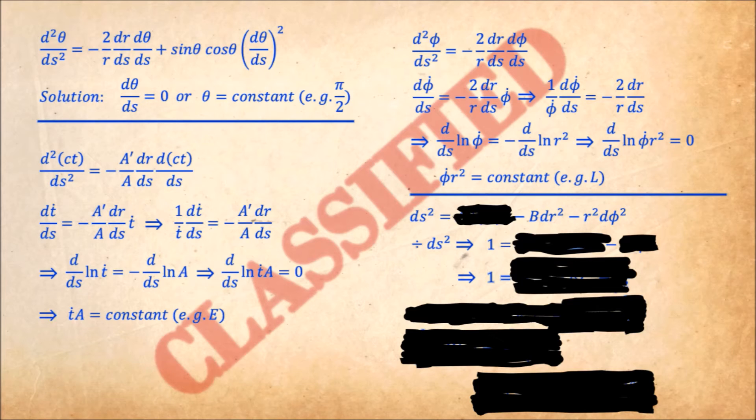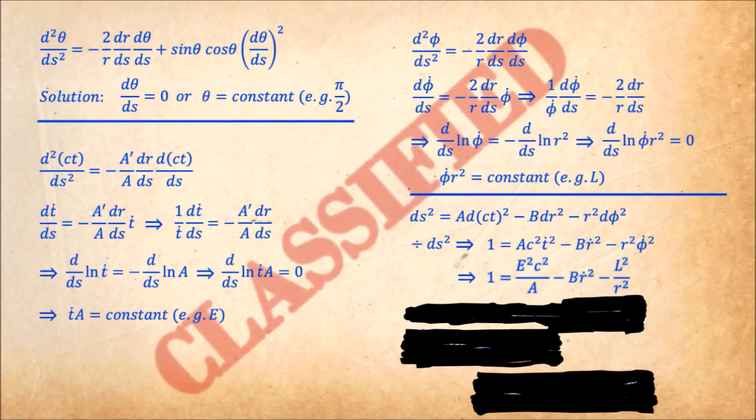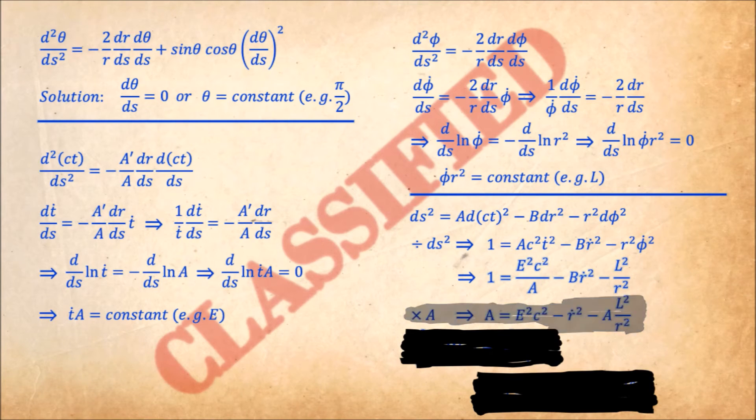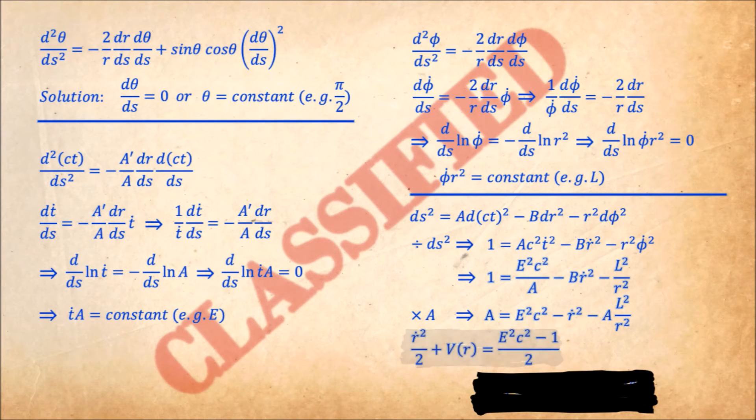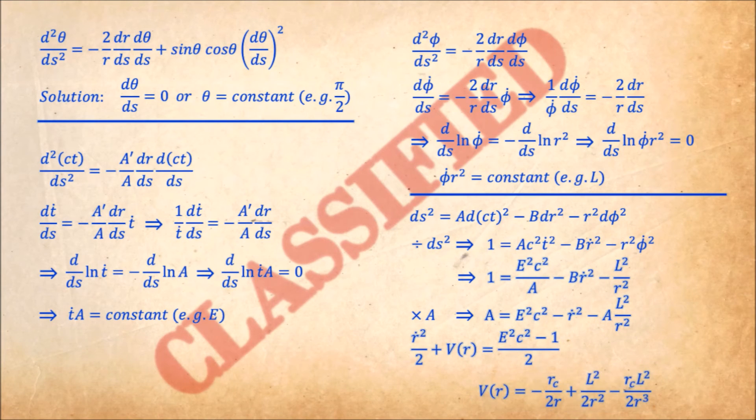Instead of solving the geodesic equation for r, which has in it a second derivative of r, let's write down the spacetime distance, which is only the first derivative of r. Dividing both sides by ds squared and replacing the two constants of motion with E and L, we arrive at a very simple relation for r and r dot, which we can simplify still further by multiplying both sides by A. What we end up with is an energy equation for a particle of unit mass and an effective potential v.